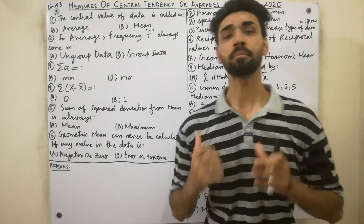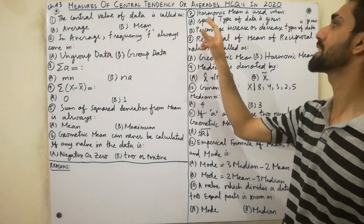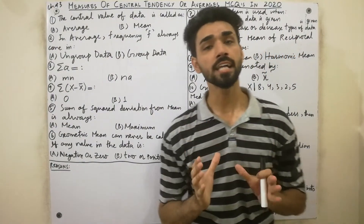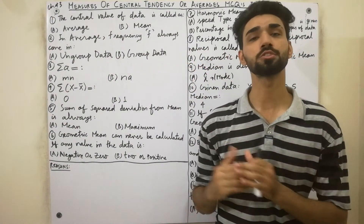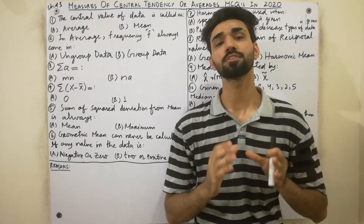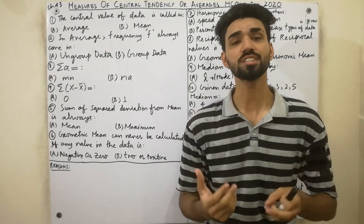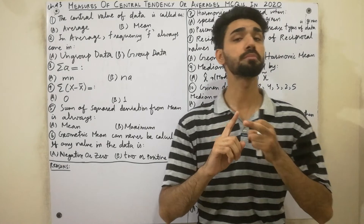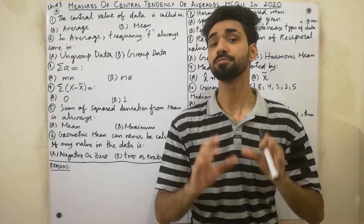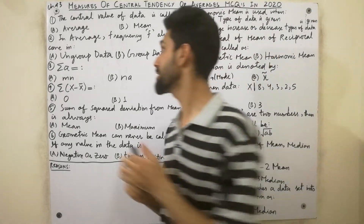Assalamu alaikum dear friends. Today I am here to explain Chapter Number 3: Measures of Central Tendency — MCQs for 2020. These MCQs are very important for you, so must watch this lecture completely. If you want to gain concepts from Chapter 1 (Introduction to Statistics) or Chapter 2 (Presentation of Data) MCQs, then must watch the description below the video.